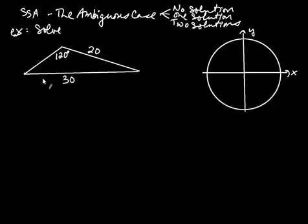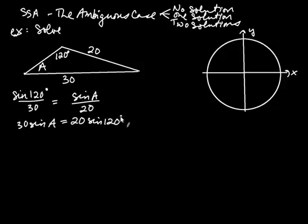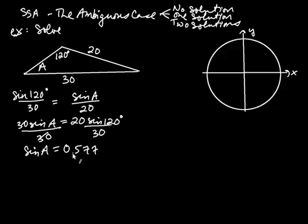Using law of sines on this example: sine of 120 divided by 30 equals sine of A divided by 20. Cross-multiplying gives 30 times sine of A equals 20 times sine of 120. Dividing both sides by 30, I get sine of A equal to approximately 0.577. Using inverse sine, A is about equal to 35.3 degrees.